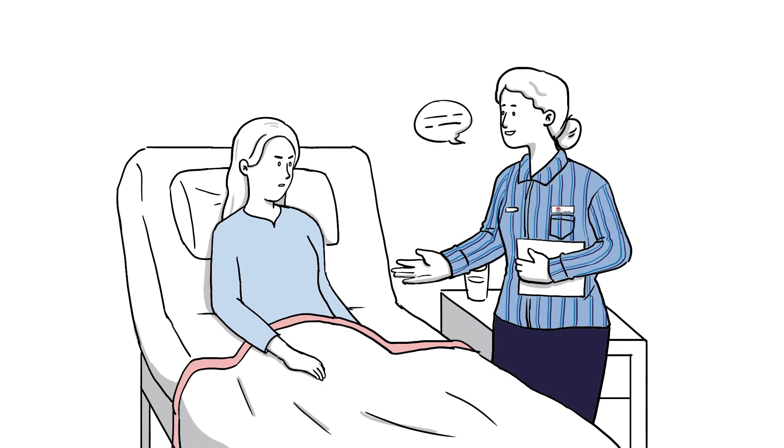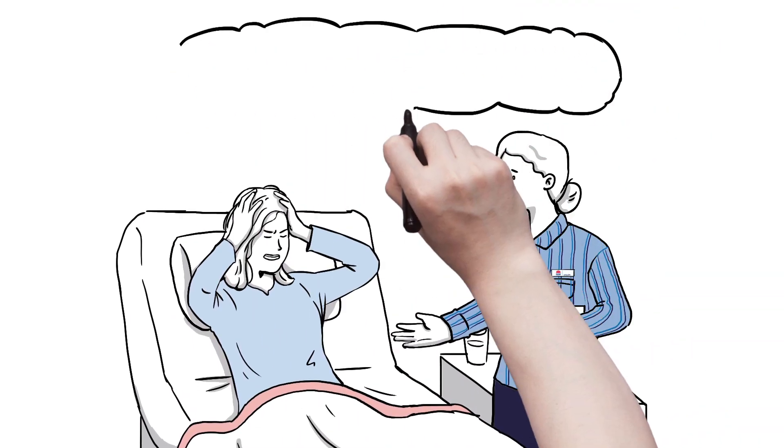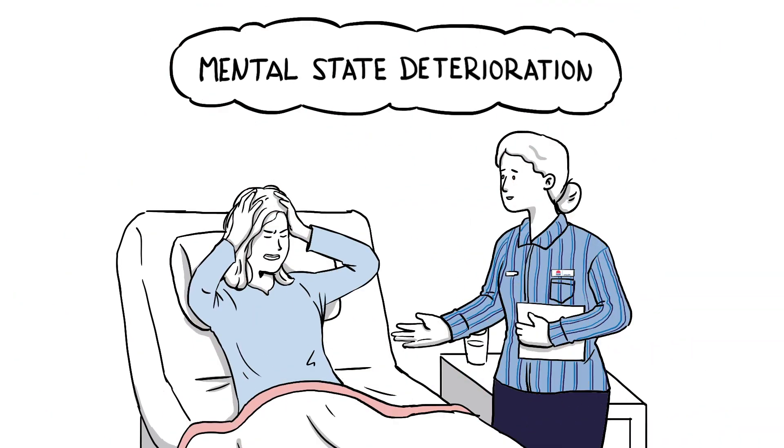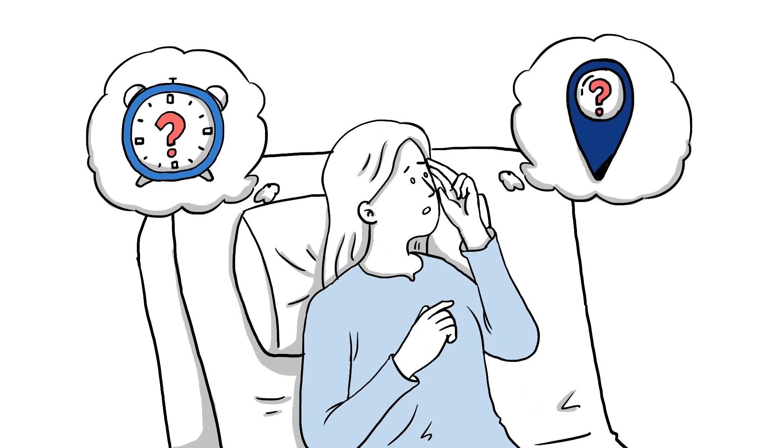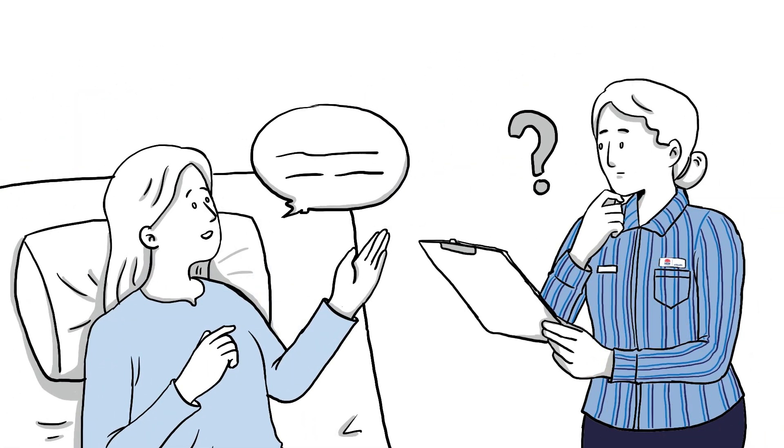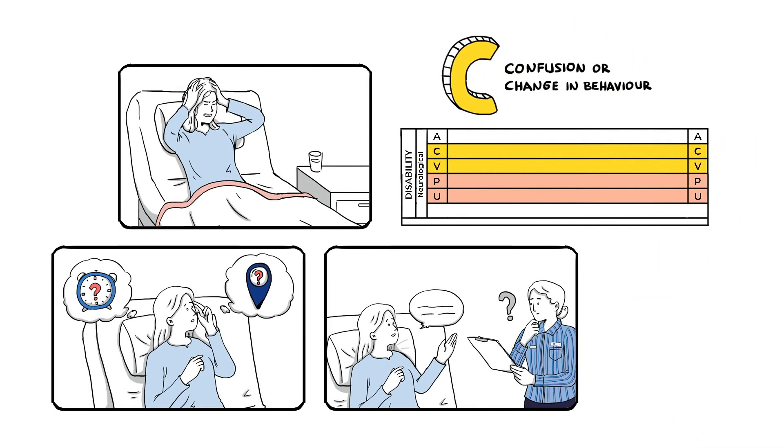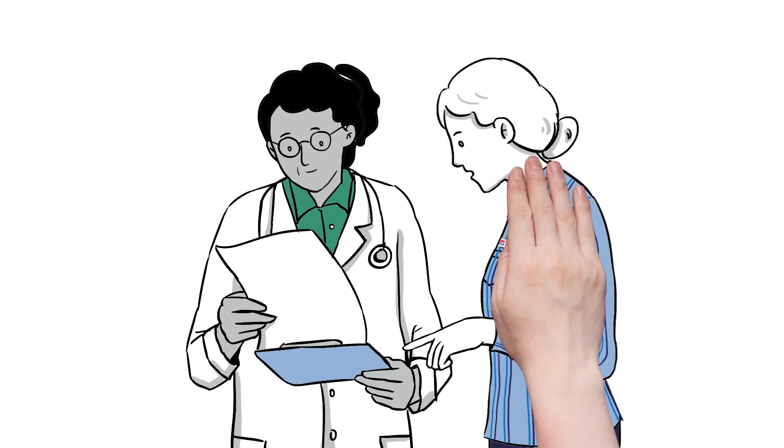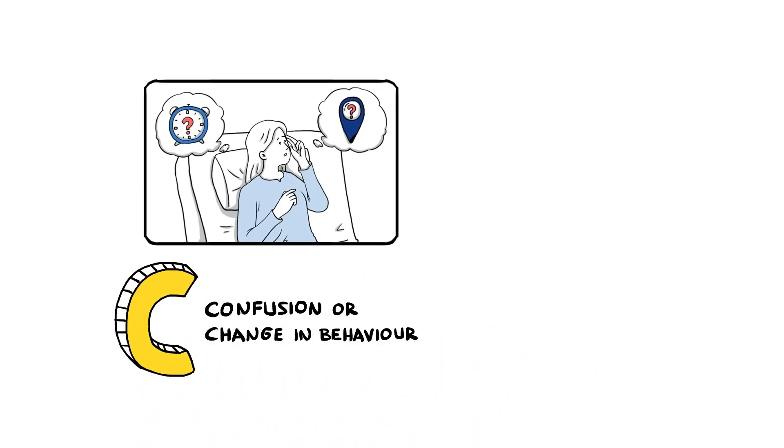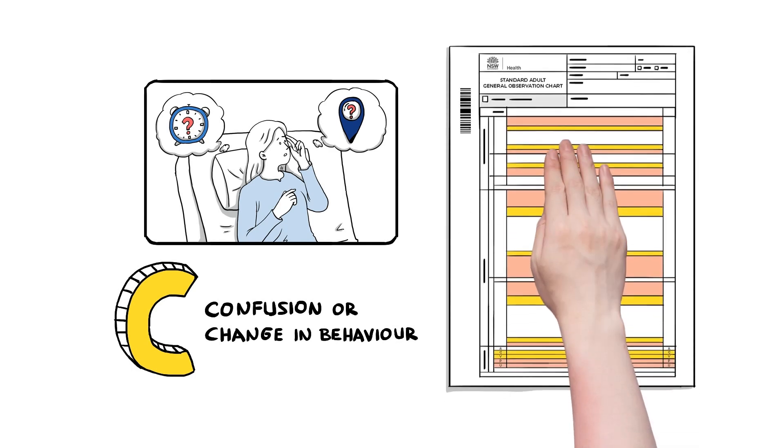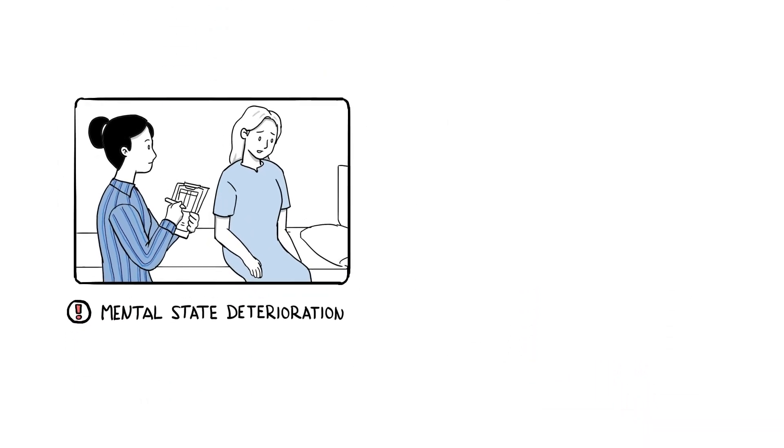Staff try to communicate with Joe, but she becomes angry and distressed. Staff recognize the continued mental state deterioration. She is becoming disoriented to time and place and her speech is nonsensical. Joe continues to trigger the yellow zone C in the ACVPU, and the nursing staff now request a clinical review. By using the C to indicate new onset confusion on the standard adult general observation SAGO chart, mental state deterioration can be flagged early.